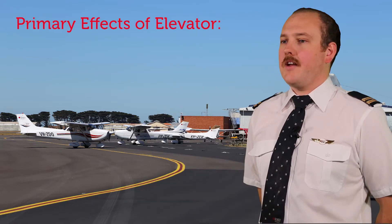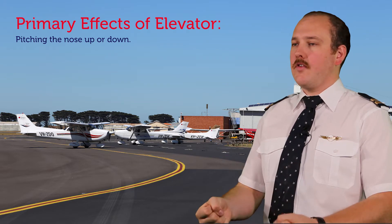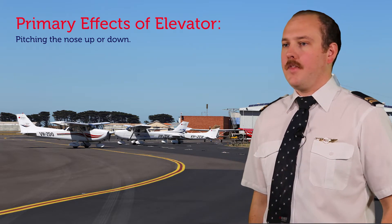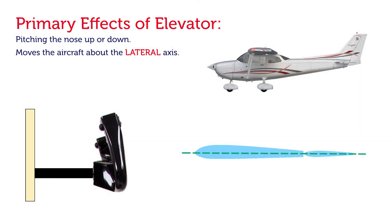Principles and the primary effect of the elevator. This covers our effects of controls — we need to understand what our control column does when we want to pitch up or descend. With the elevator, pulling the control column back will raise the nose, and pushing it forwards will lower the nose. This moves the aircraft about the lateral axis. In the first picture of our Cessna 172 flying straight and level, the elevator is level.